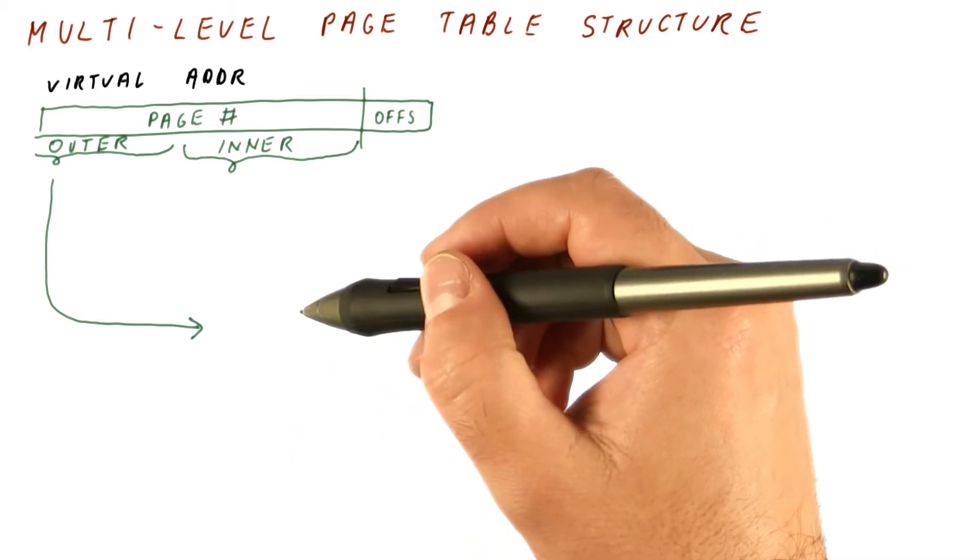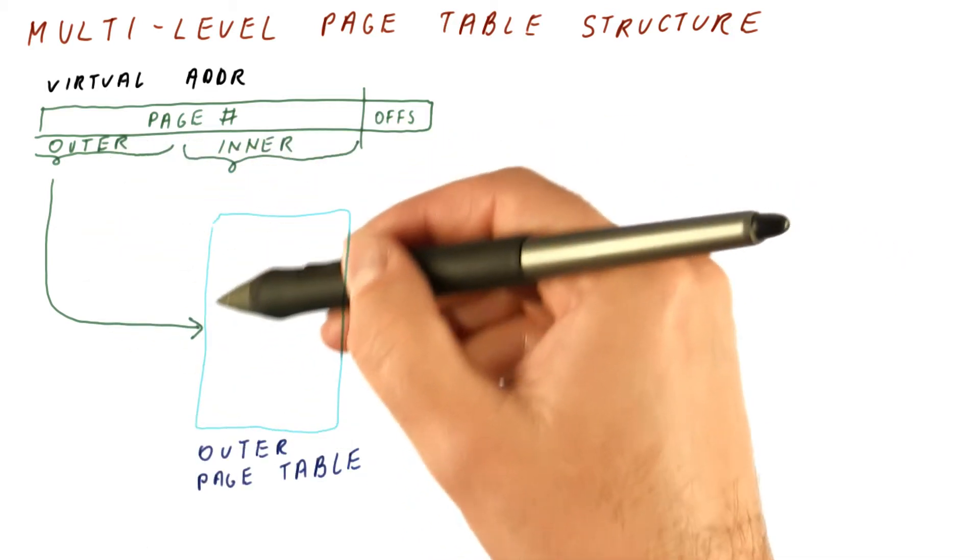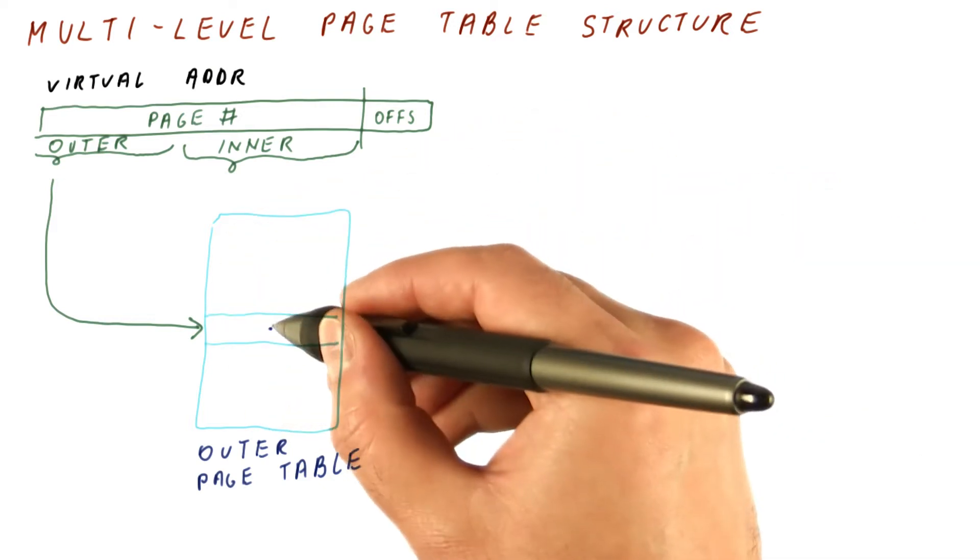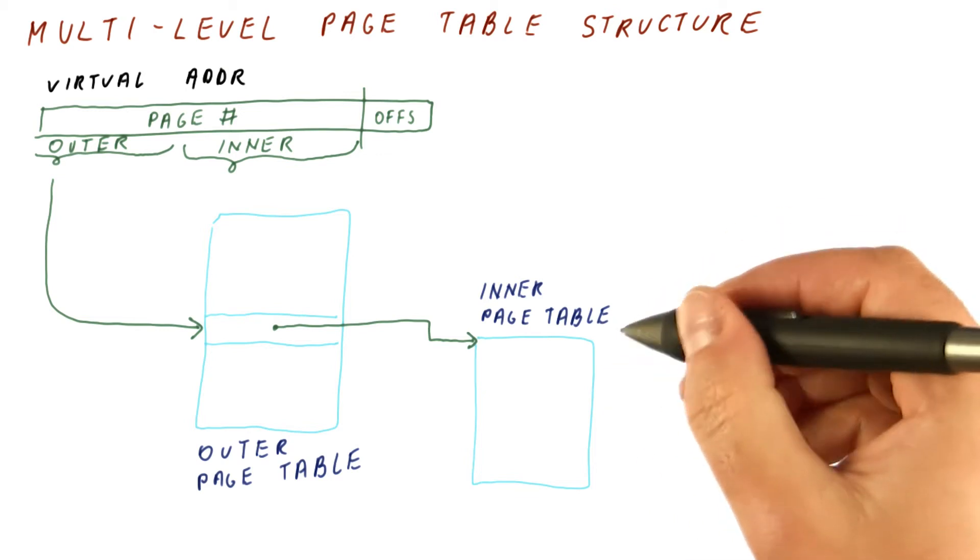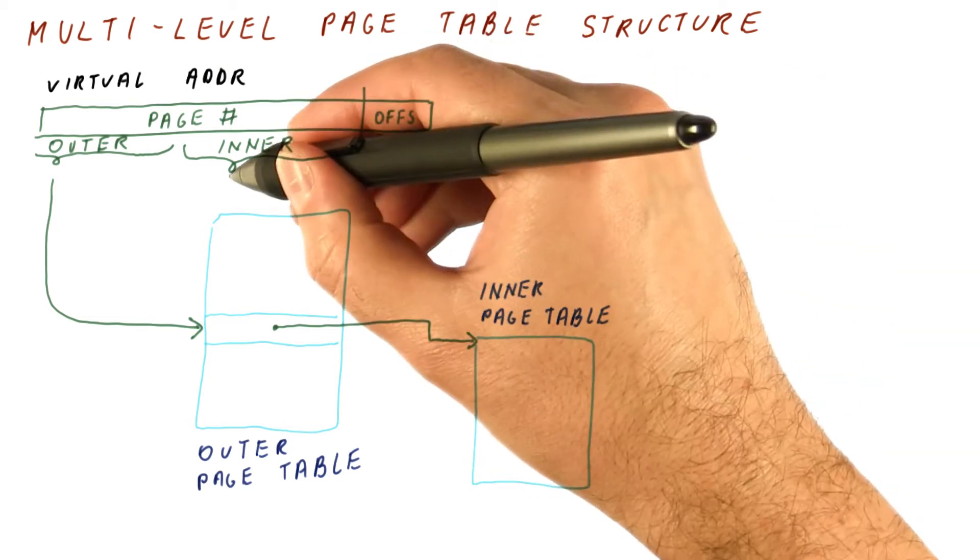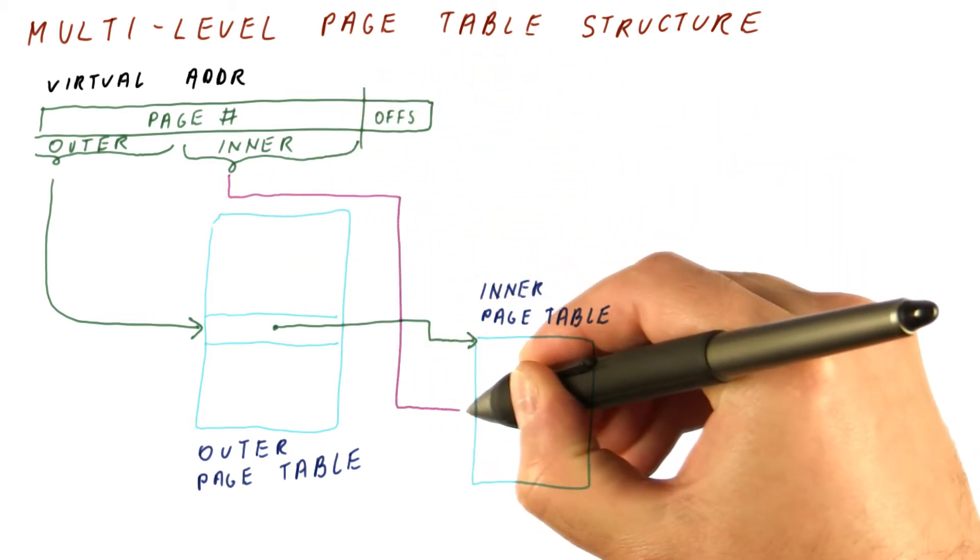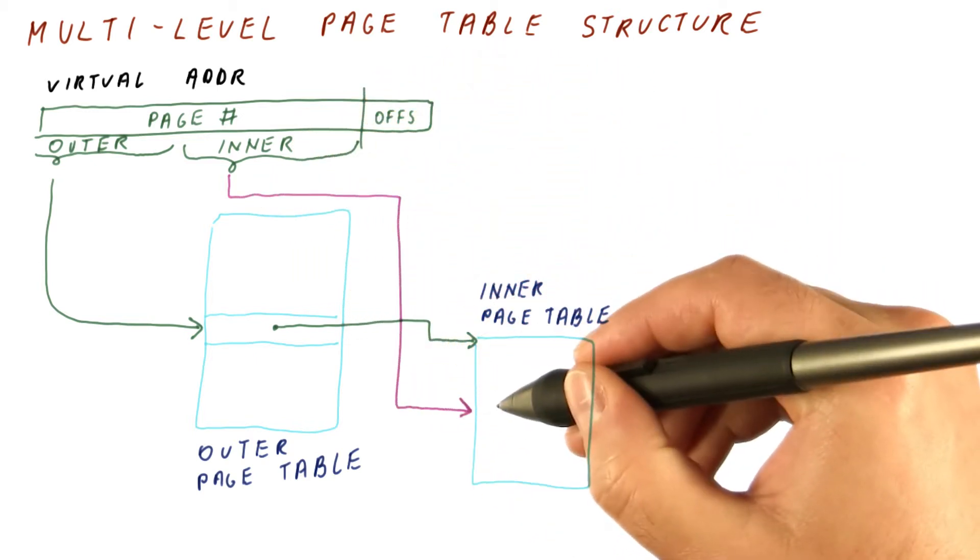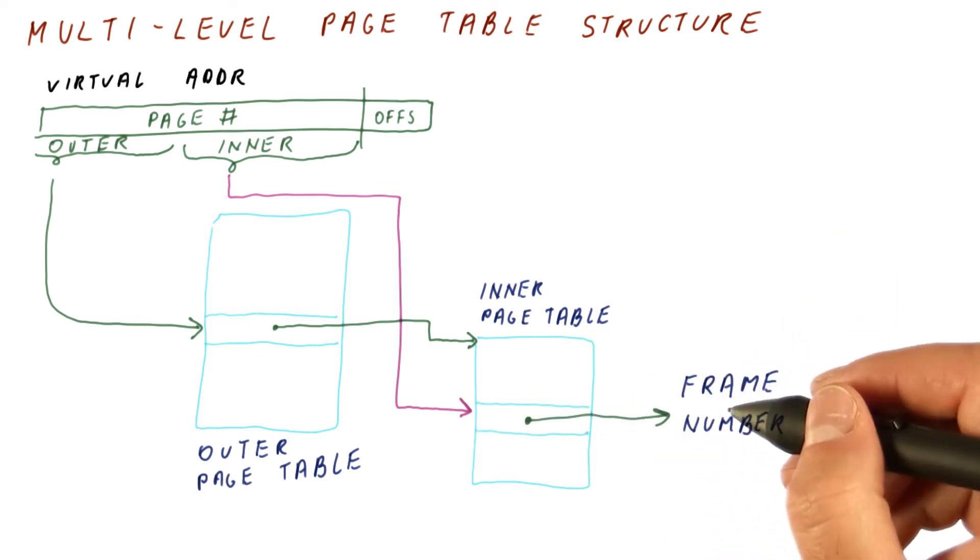Instead of having the large page table, the outer page number is now used to index into the outer page table, and each entry in the outer page table tells us where to find the so-called inner page table. Once we find the inner page table, we take the inner page number and use it to index into the inner page table, and what we find there is the actual frame number to access.